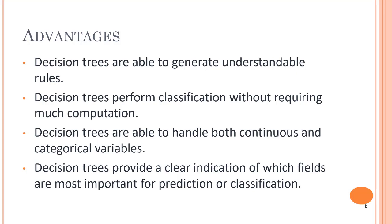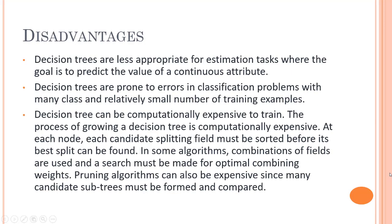Now we have seen so many advantages of decision trees. Let's look into some of the major disadvantages. The first and most important disadvantage of decision trees is overfitting. The main problem of decision trees, in a nutshell, is overfitting. We have already discussed what we mean by overfitting.